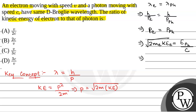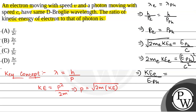The momentum of photon is given by energy of photon by C. So squaring both sides: 2 times mass of electron times kinetic energy of electron equals energy of photon squared by C squared. Rearranging, kinetic energy of electron divided by energy of photon equals energy of photon divided by C squared times 1 over 2 times mass of electron.